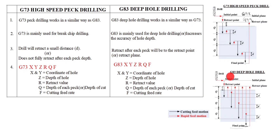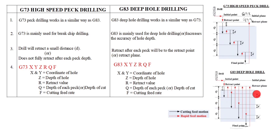Now we will see the G83 operating process. The tool drills to the depth of cut Q, then it retracts to point R. Point R is the retract point. Then it moves to the point which is higher than the previous drilling endpoint by the distance D in rapid traverse, and starts the next drilling with depth Q plus D. This motion continues until it reaches the specified Z depth; then the tool retracts to point R or the initial point to complete the deep hole drilling cycle. Thanks for watching this video.